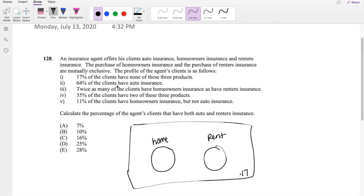64% of clients have auto insurance. Okay, but I think auto insurance is going to look like that, where there's some that have renter's insurance that have auto insurance and some that have home insurance that have auto insurance. So I think it's going to look like this. So auto insurance in total is 64%.